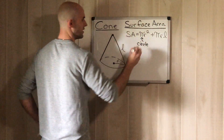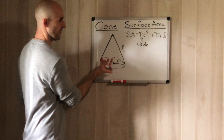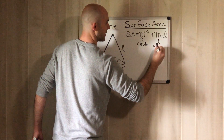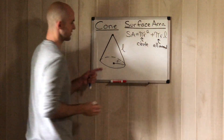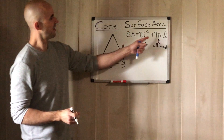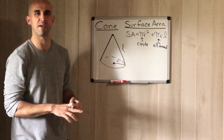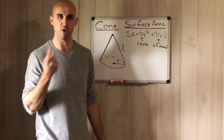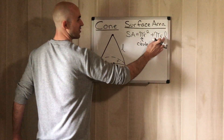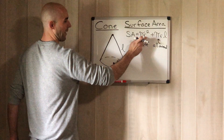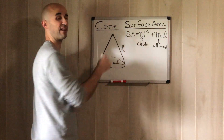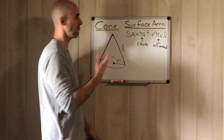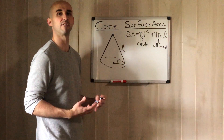πr² represents the area of the circle — the base. πrl gives us the area of the lateral surface, the part that goes all around the cone. Think of it like an ice cream cone: πrl is the actual cone part you hold and eat, and πr² is the circle on the bottom. Since we're finding total surface area, we add them together. That's all there is to it.